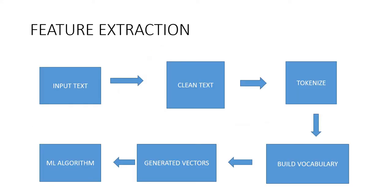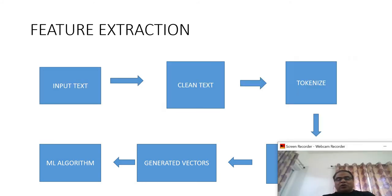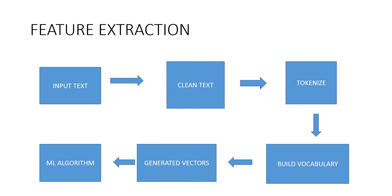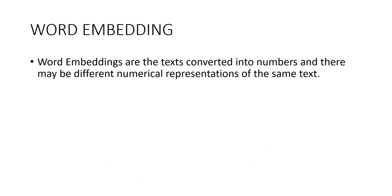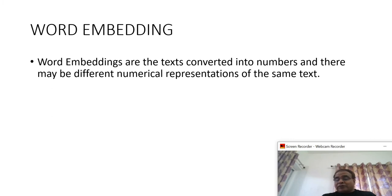This is the pictorial representation of feature extraction. The input is text — we clean it, tokenize it. For tokenization we have different videos using NLTK, natural language toolkit, and using Keras and TensorFlow. After that we build the vocabulary, generate the vectors, and these vectors are fed into the machine learning model. The reason is that our machine learning model cannot understand text — it can understand only numbers or digits. That is why we convert text into numbers, in the process known as word embedding.